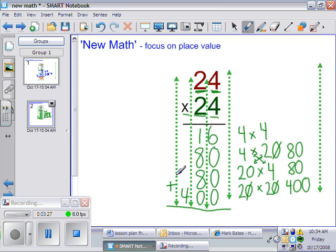So to find our final answer, six plus zero plus zero plus zero is six. One plus eight is nine, plus eight is seventeen. Carry the one. One plus four is five. So our final answer for twenty-four multiplied by twenty-four is five hundred seventy-six.